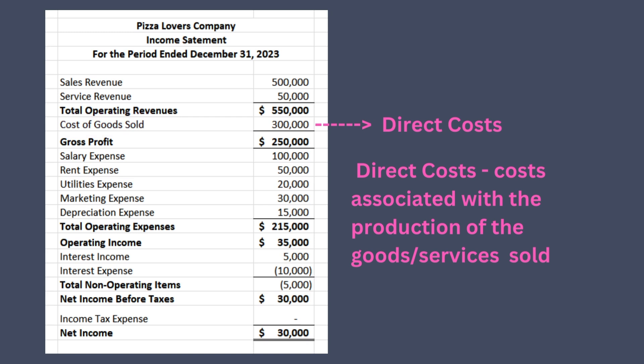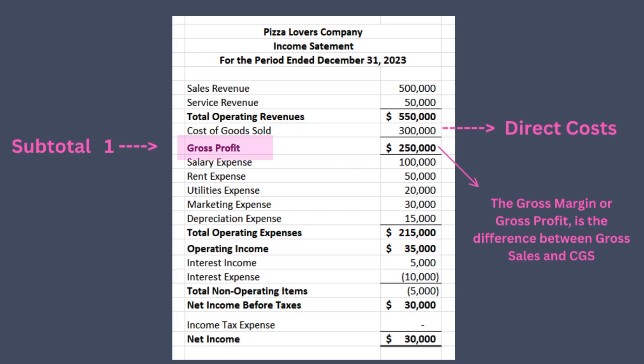In this example, the cost of goods sold for Pizza Lovers Inc. would be the cost of the ingredients used to make the pizza. In service businesses, direct costs are those directly associated with the provision of services and include direct labor and direct materials. Gross margin, or gross profit, is the difference between gross sales and cost of goods sold. This is your first useful subtotal and it is typically used to evaluate how efficiently a company manages labor and supplies in production.